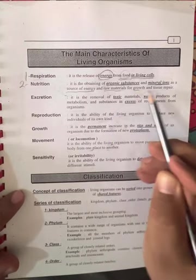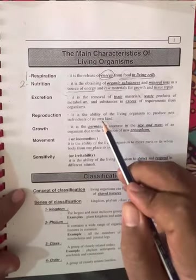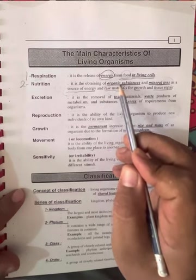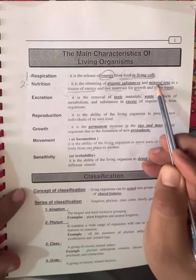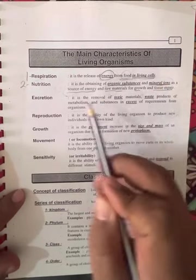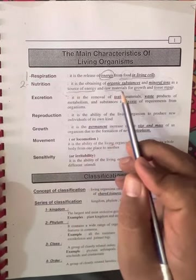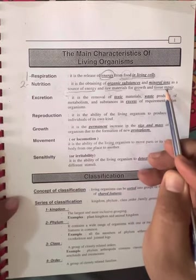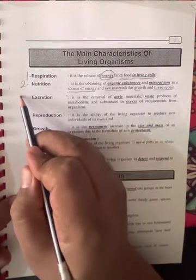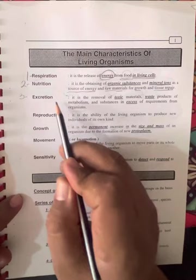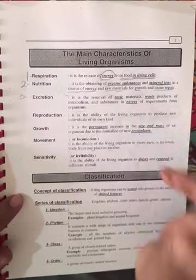So the cell obtains organic substances and mineral ions and uses them as a source of energy and raw material for growth and tissue repair. Number three: excretion. Excretion is the removal of wastes and toxic wastes.